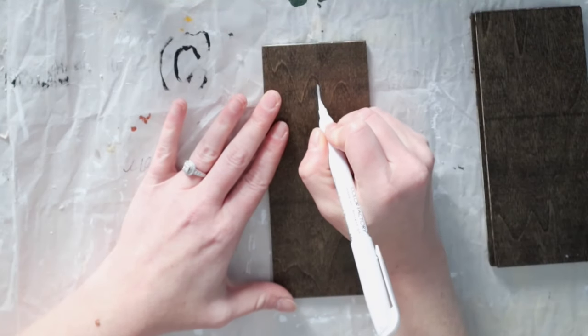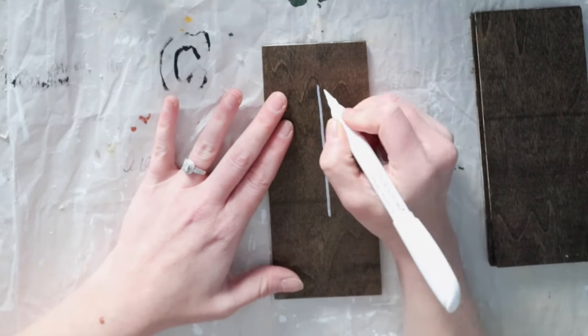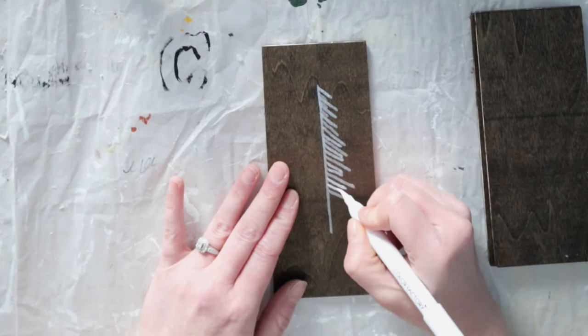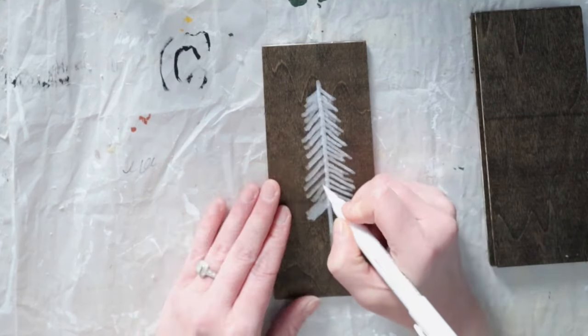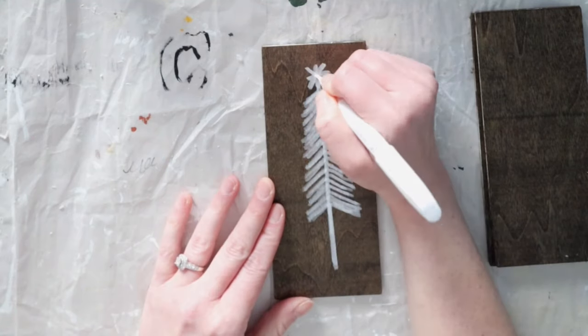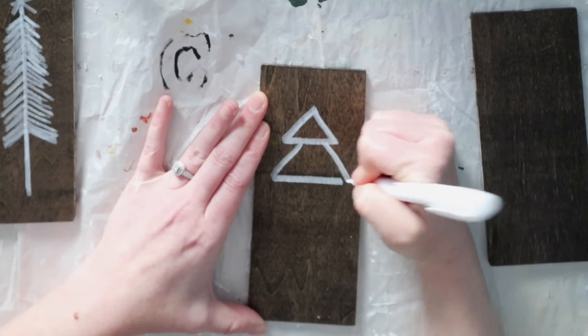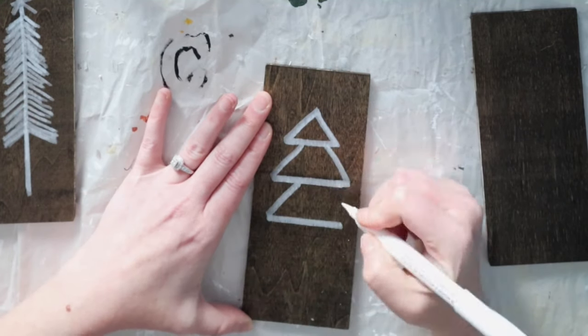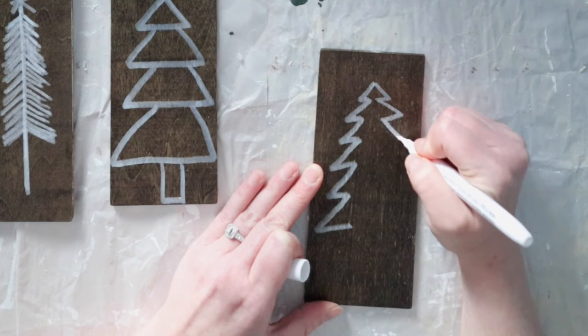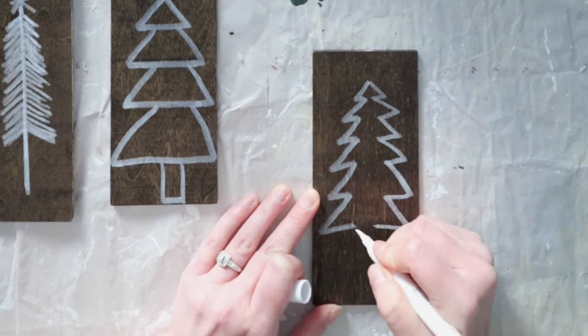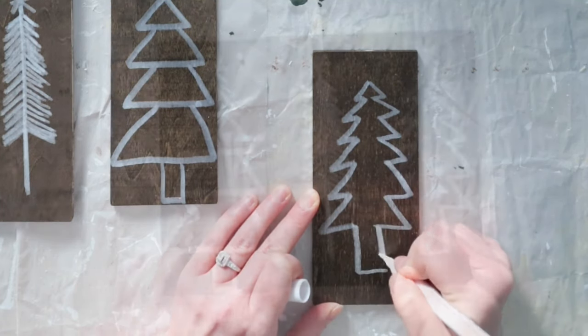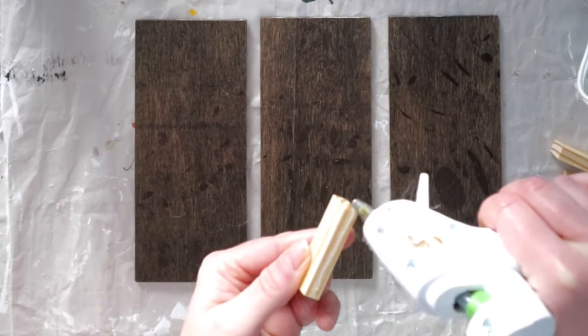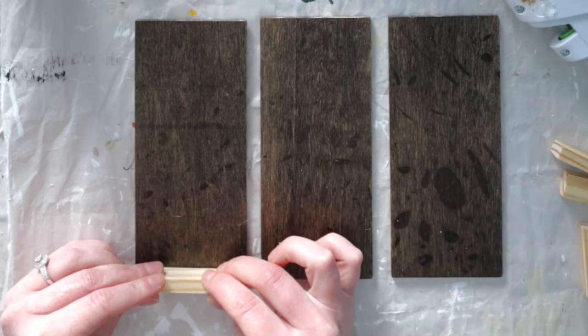I just took my white paint marker and drew Christmas trees on each plank. Feel free to trace them out or use stencils as well. I just freehand them to look more rustic. Finally, I'm just going to hot glue a Dollar Tree tumbler block to the back of each one so they can stand on their own.